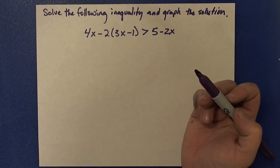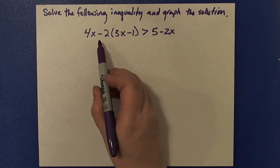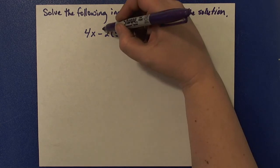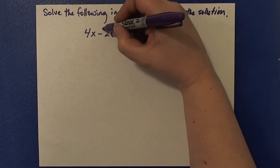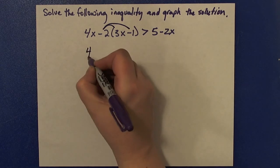When I go about solving this, my first step would be to simplify each side. On the left-hand side, I have a distributive property, where I'm going to distribute and multiply everything by this negative 2. So I'll end up with 4x.